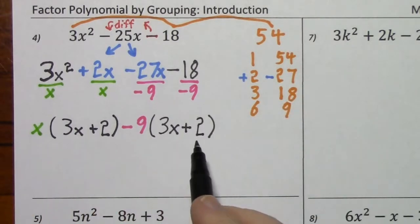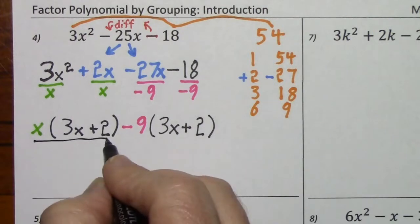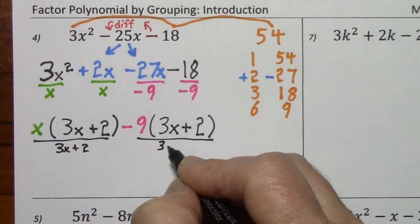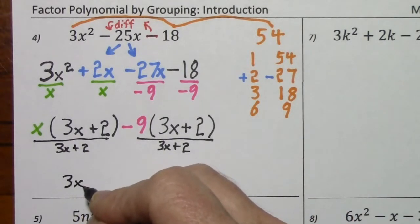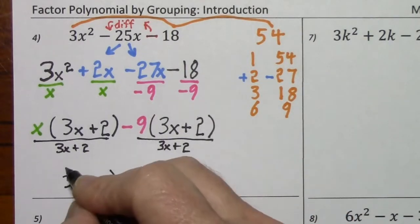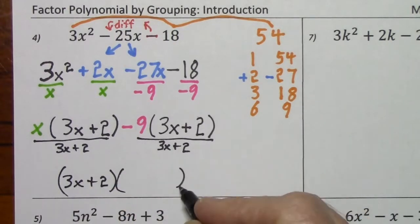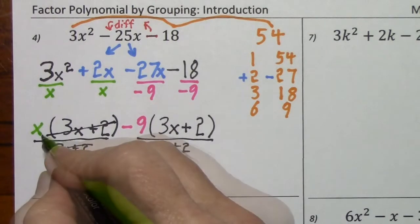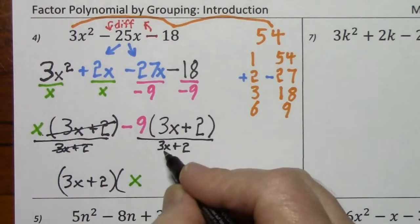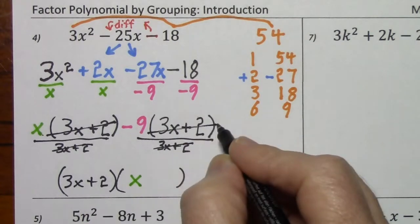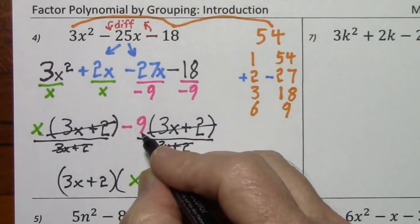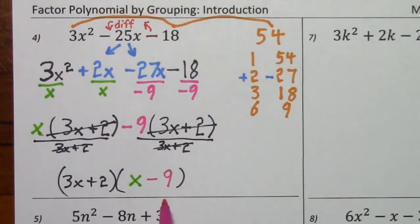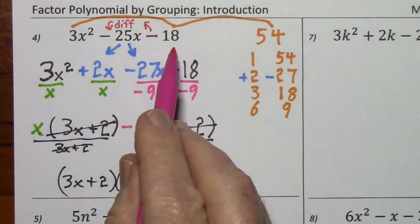Here negative divided by negative will be positive — 18 divided by 9 equals 2. Now we have the same thing in parentheses, and that's what we'll factor out. When we factor it out of here we're left with x, and when we factor it out of here we're left with negative 9. So here's the factored form of our original polynomial.